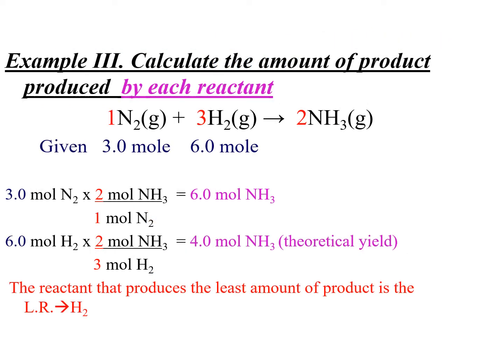Method 3. Calculate the amount of product produced by each reactant. Now, we consider nitrogen and hydrogen again to form NH3. If you are given 3 moles and 6 moles, yung 3 moles of N2 will produce 6 moles of NH3 by this relationship. The limiting reactant that produces the least amount of product is the limiting reagent. Ibig sabihin, alin ba mas mababa sa kanila? Ito. H2 is the limiting reagent.